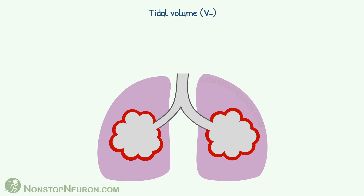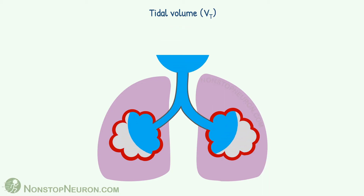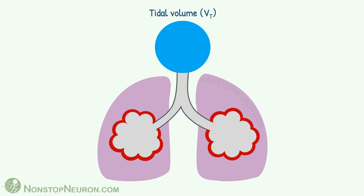Now let's see tidal volume. It's the amount of air that we breathe in and out with each respiration. Normally it's about 500 ml in adults.